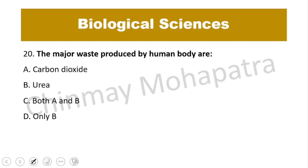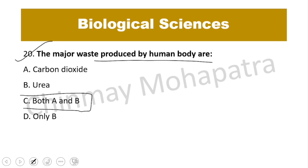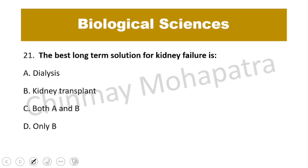Question number 20: What are the major waste products of the human body? Both carbon dioxide and urea are major waste products produced by the human body.